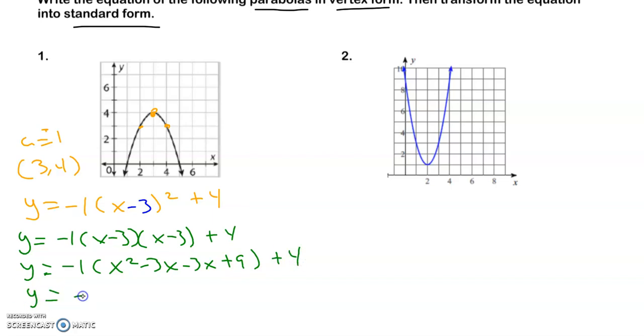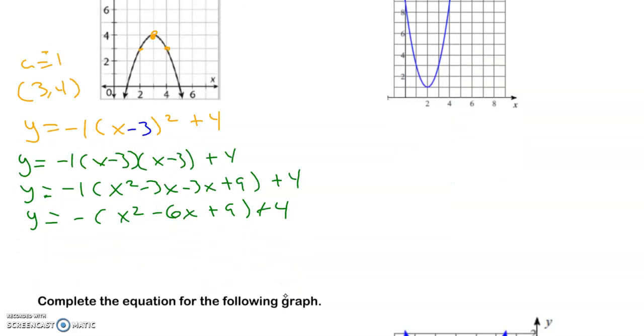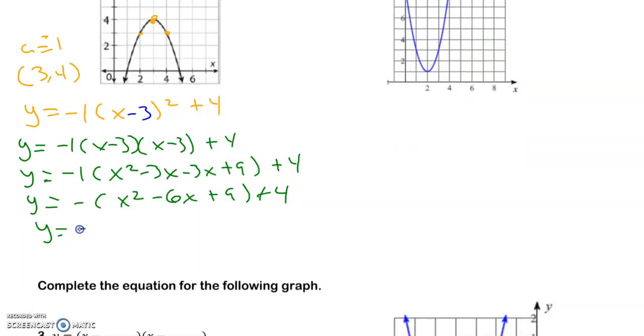Then I do y equals, and I'm just going to make it a negative now. So it's x squared minus 6x plus 9. I don't really need to write the 1. And then I'm going to distribute that negative, and then I'm going to finally add the 4 to it. And I am done. Awesome.